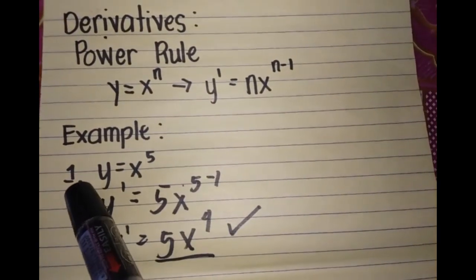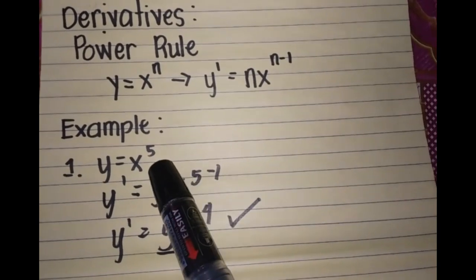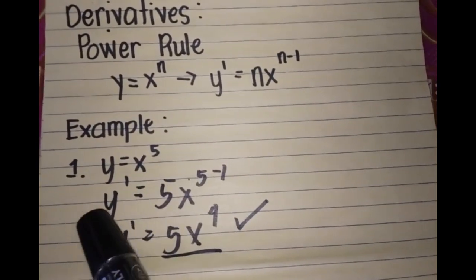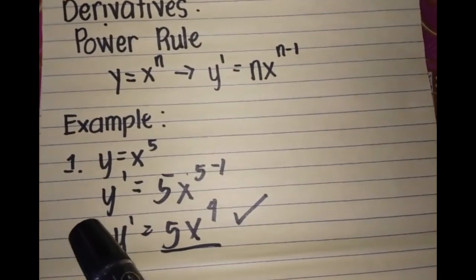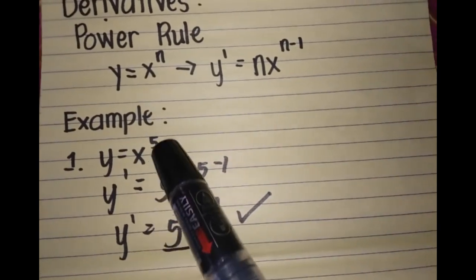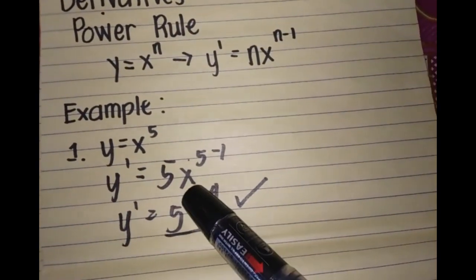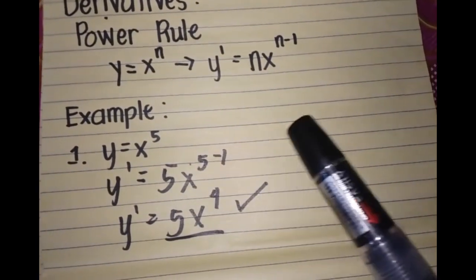For example, we have y equals x raised to 5. Our exponent here, n, is 5. Using these steps, we can write it as y prime equals 5 times x raised to 5 minus 1.